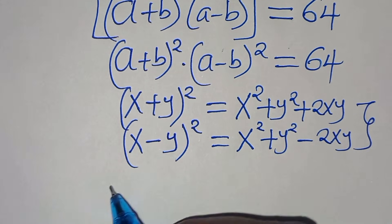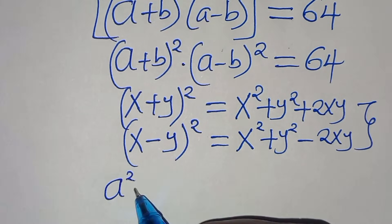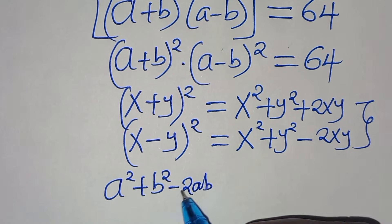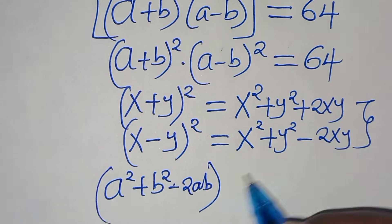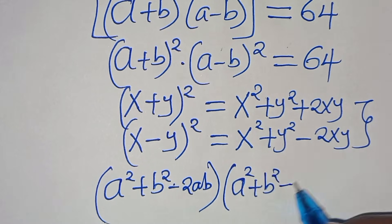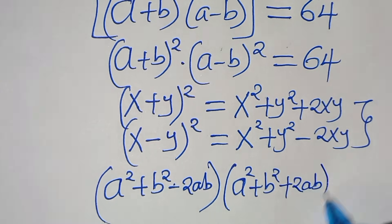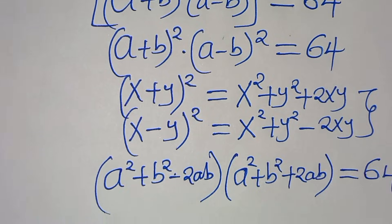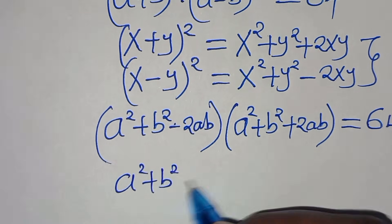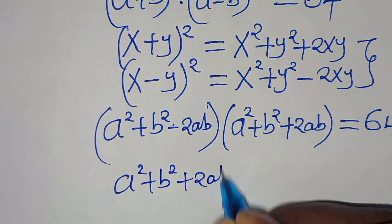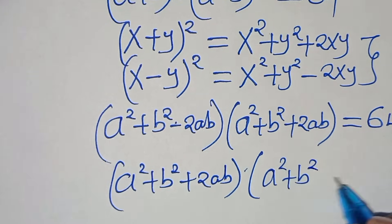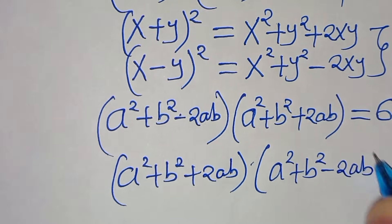We get (a squared plus b squared minus 2ab) multiplied by (a squared plus b squared plus 2ab) equals 64. This can be rewritten as (a squared plus b squared plus 2ab) multiplied by (a squared plus b squared minus 2ab) equals 64.